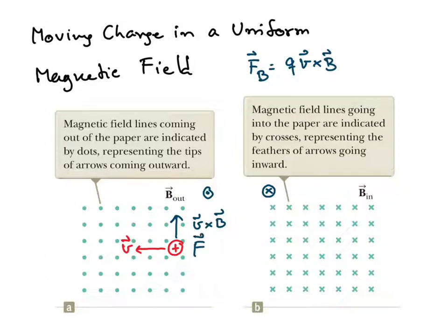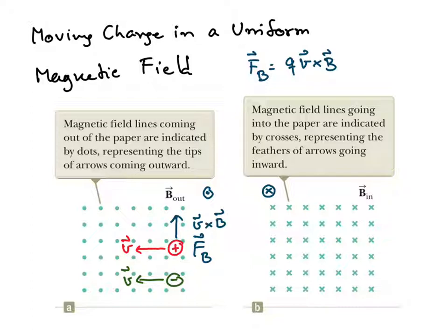Since this is a positive charge, the magnetic force points in the same direction as V cross B. But if you have a negative charge moving in the same direction, V cross B still points upward, but we have the negative sign, which means that F_B will point downward.